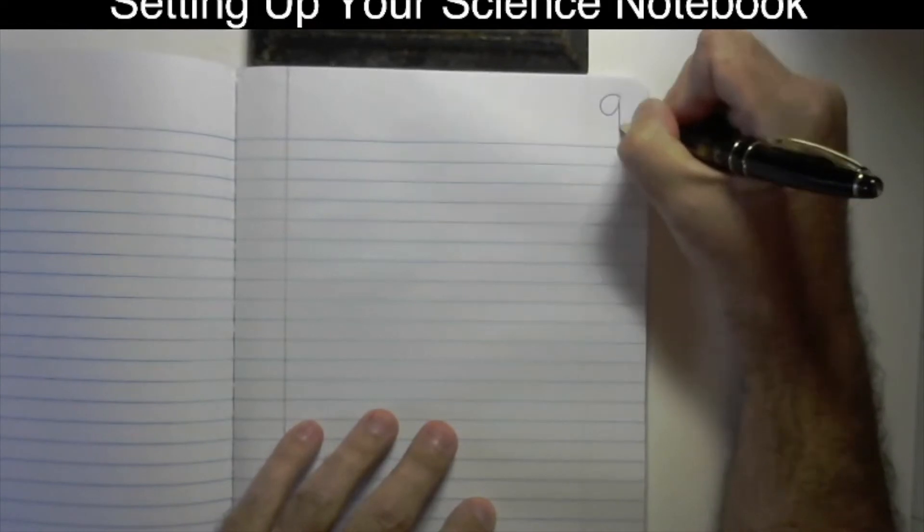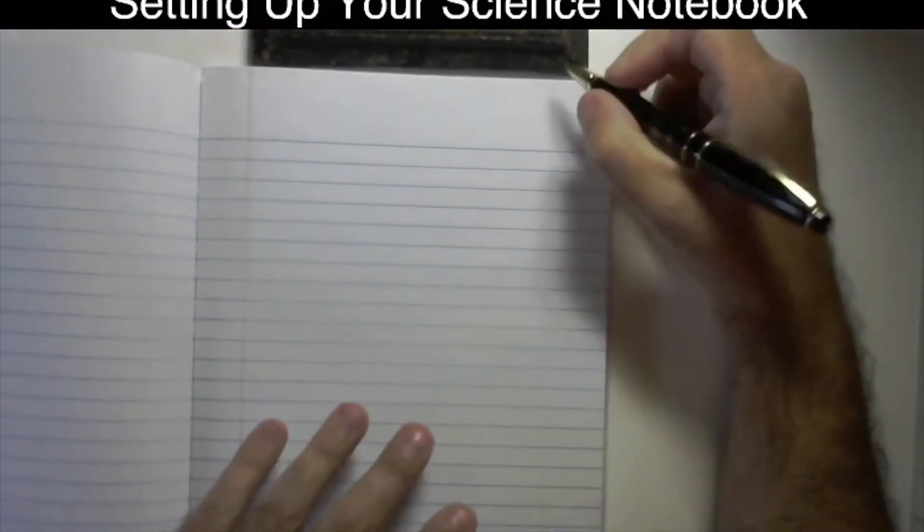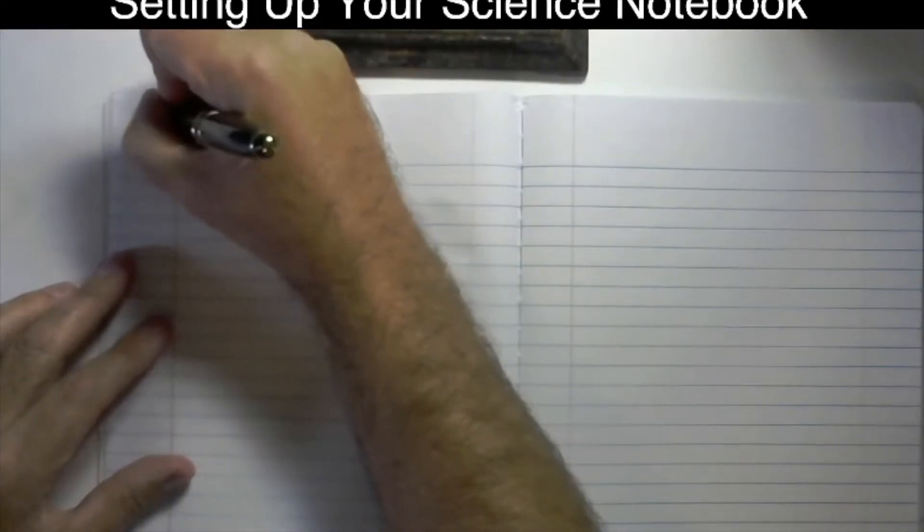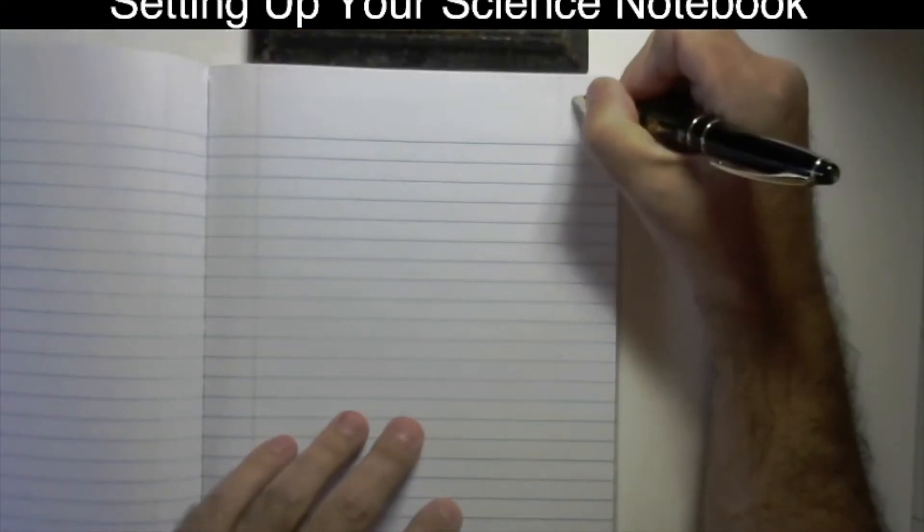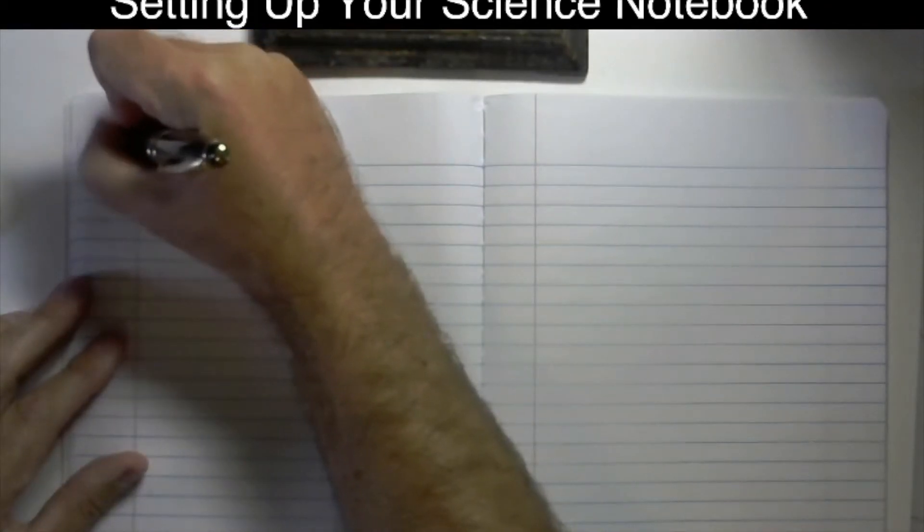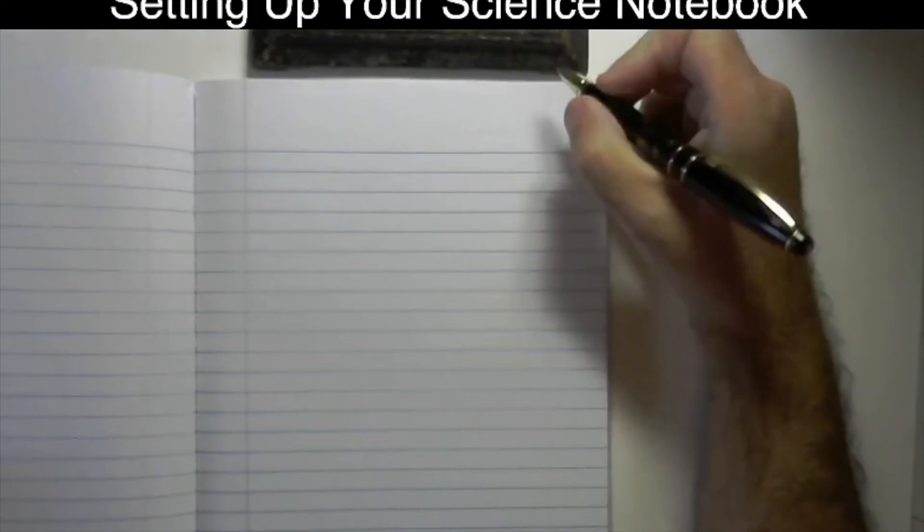Now, why are we numbering the pages front and back? Again, we want to maximize the amount of space that we have in our notebooks. I know 100 pages sounds like a lot, but as we start to fill it up with handouts and lab reports, reflections, journal entries, and so on, that space is going to fill up really quickly. Now, again, I can't guarantee that we are going to fill up all of the pages in our notebook, but we sure are going to try. We're going to give it the old college try, as they sometimes say. So here's page 17, 18, 19, and 20.